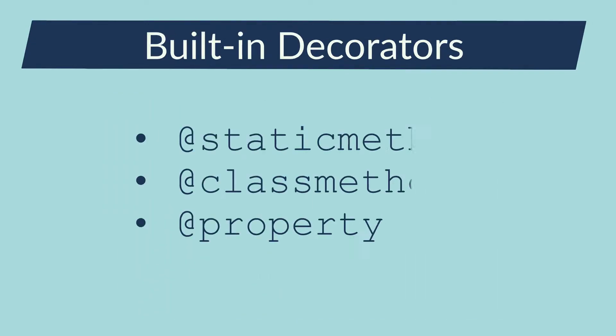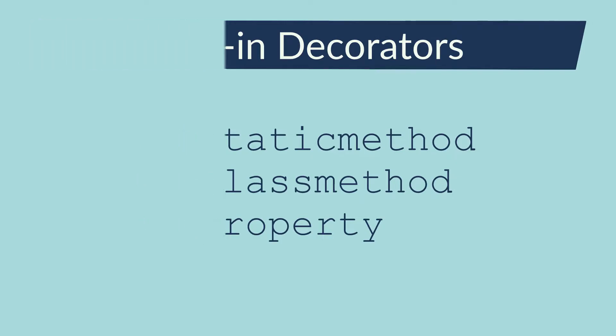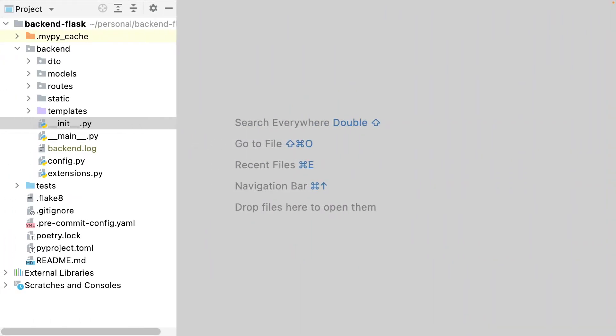Those were the main built-in decorators used in Python. Those decorators modify the method where they are placed. But let's see what else I can do with a decorator. Let's see how to implement my own decorator. A decorator is like a wrapper — it will surround the method where it's placed. As my first example, I will calculate the time elapsed in a method using a decorator. As the decorator allows me to run some code before and after calling the method, I will save the start time and the end time and compute the difference.